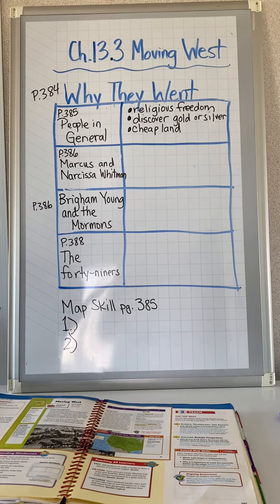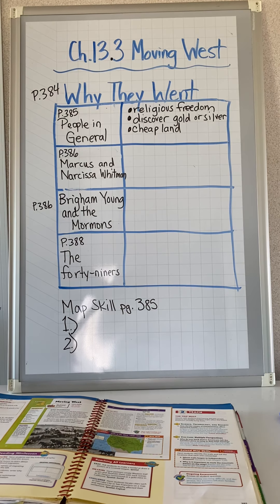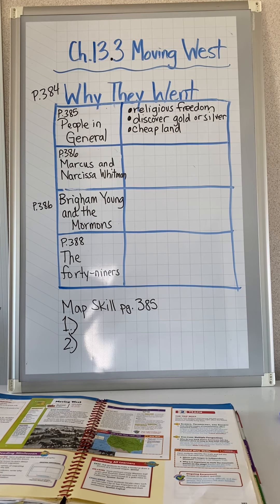If you remember from a few lessons ago, we were talking about the pioneers — those that started to go first and check out the land. People were looking for more space and cheap land because so many people were coming in on the east coast. On the right side of the Appalachian Mountains there was no room for people, and the land was so expensive because there wasn't much of it while people kept coming in.